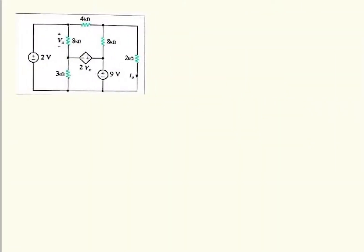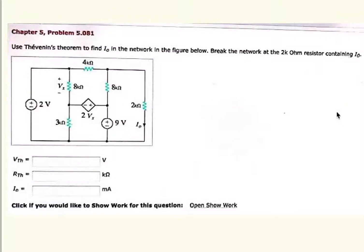So first of all by seeing this circuit we can tell this circuit is having both dependent and independent energy sources. This and this is independent energy source and this is a dependent energy source. Now let us calculate the things which is asked to be Thevenin's voltage, Thevenin's resistance and I0.